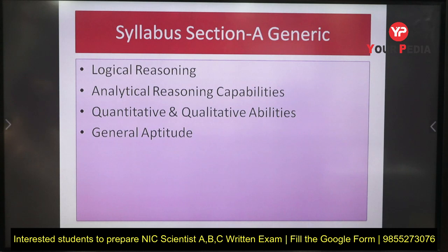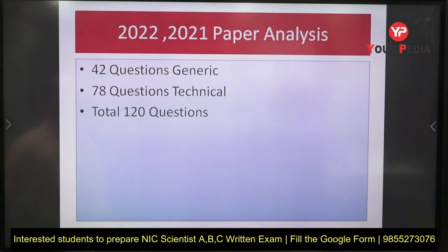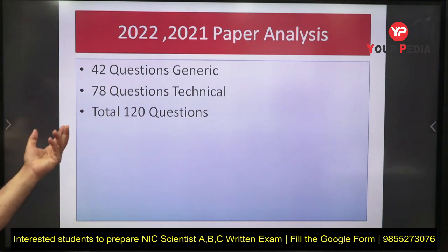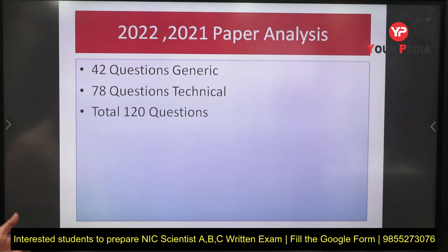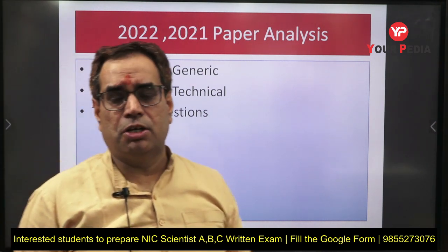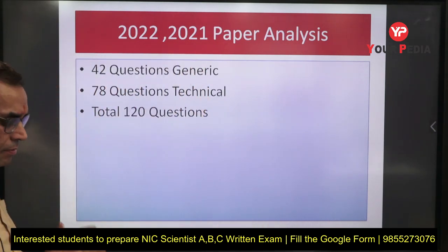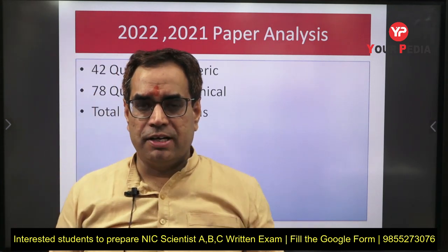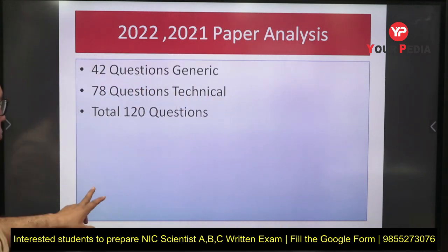We will now analyze the papers from 2022 and 2021. In both papers, there were a total of 42 questions in the generic (non-technical) section and 78 questions in the technical section, making 120 questions total. Getting 42 correct answers is very beneficial. The level of questions is not very tough — if you prepare the topics once, you will definitely be able to solve the questions in the exam.